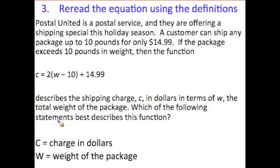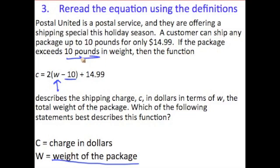So what do you suppose 'minus 10' is? Since the weight of the package is in pounds, when they subtract 10 from the weight of the package, what are they doing? Well, they are taking 10 pounds away from the total weight. Let's go back and read it: a customer can ship any package up to 10 pounds for only $14.99. If the package exceeds 10 pounds in weight — so W tells us this equation only works when the weight is over 10 pounds. If the weight is over 10 pounds, we subtract 10 pounds from the total weight, multiply by 2, and add $14.99.